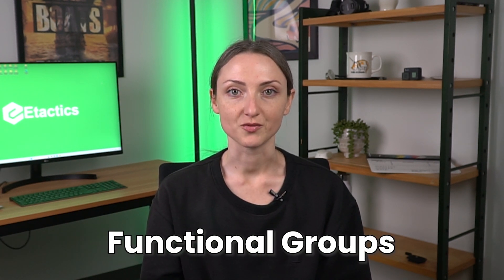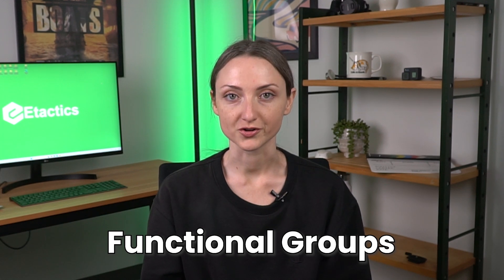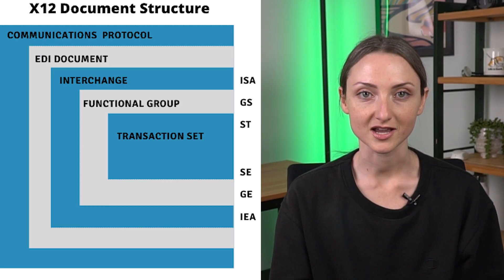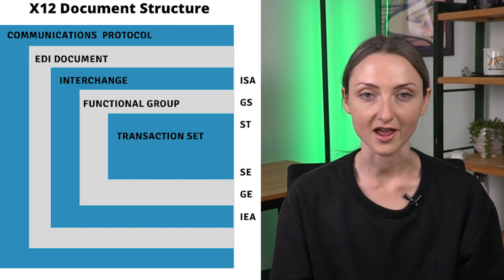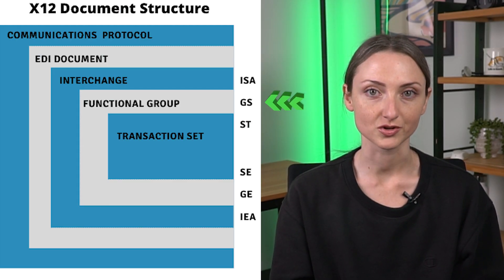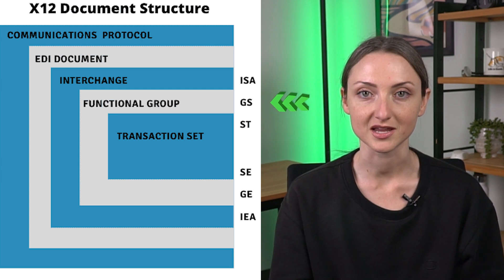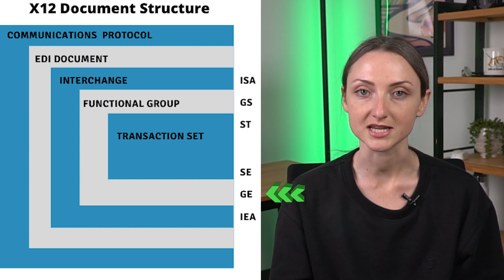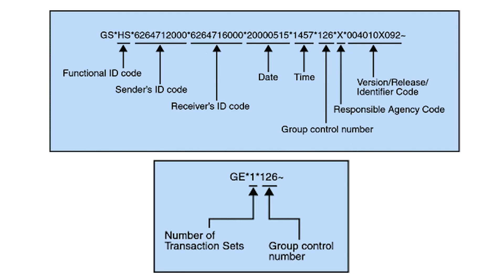Inside the interchange envelope are functional groups, which group together transaction sets of the same type. Each group starts with a GS segment and ends with a GE segment. These segments include items such as functional ID codes, the sender and receiver IDs, responsibility agency code, and the number of transaction sets within the group.